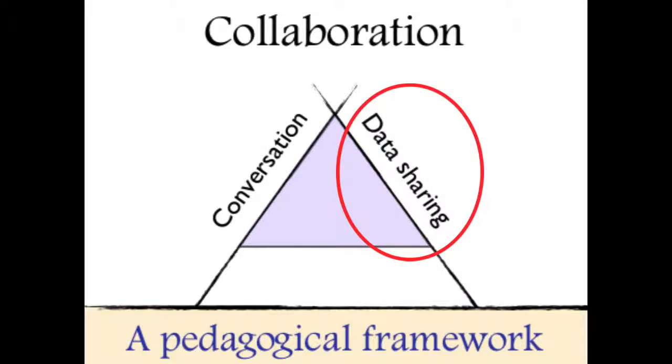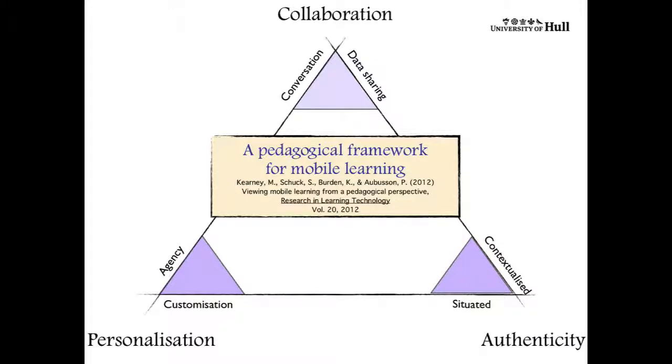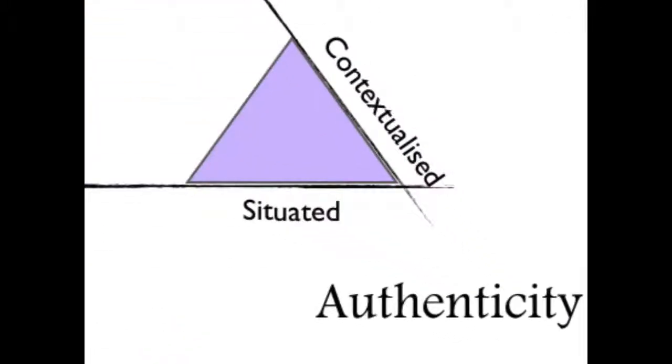The third and final element of the framework is authenticity, a concept which is used to explain how mobile devices like the iPad or a mobile phone can be used to make learning more realistic and more meaningful. In this case, the two sub-elements, contextualisation and situatedness, describe how mobile devices are able to provide greater and easier access to more realistic tasks and contexts for learning.